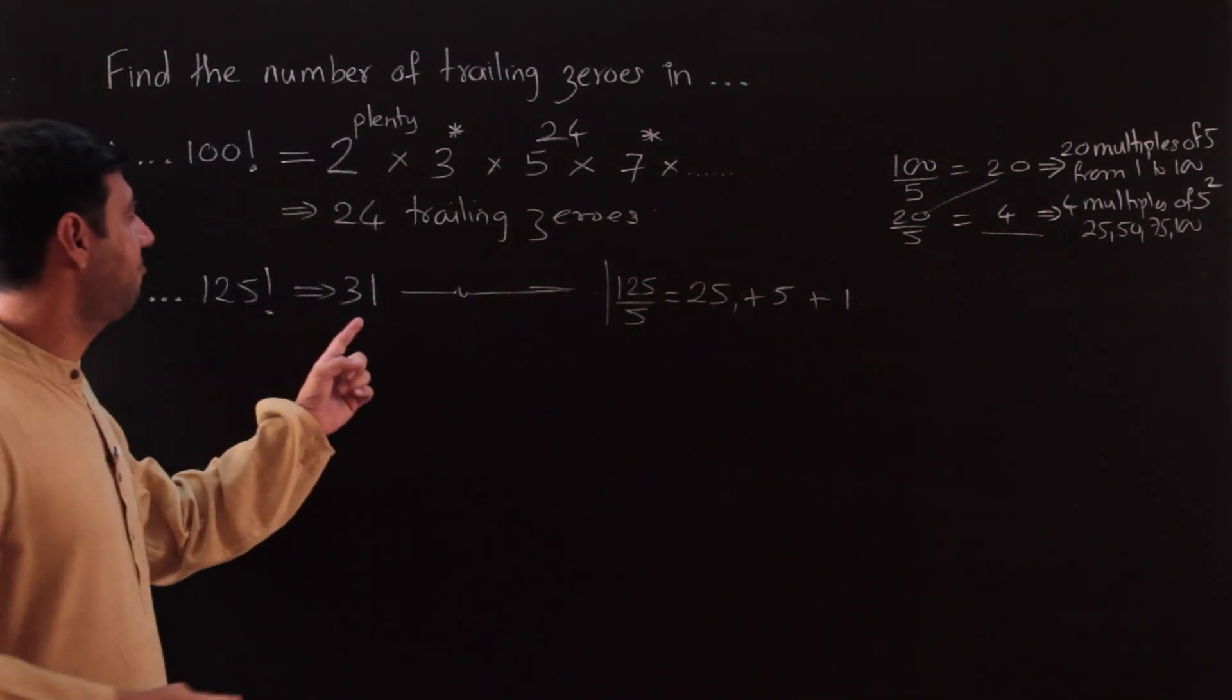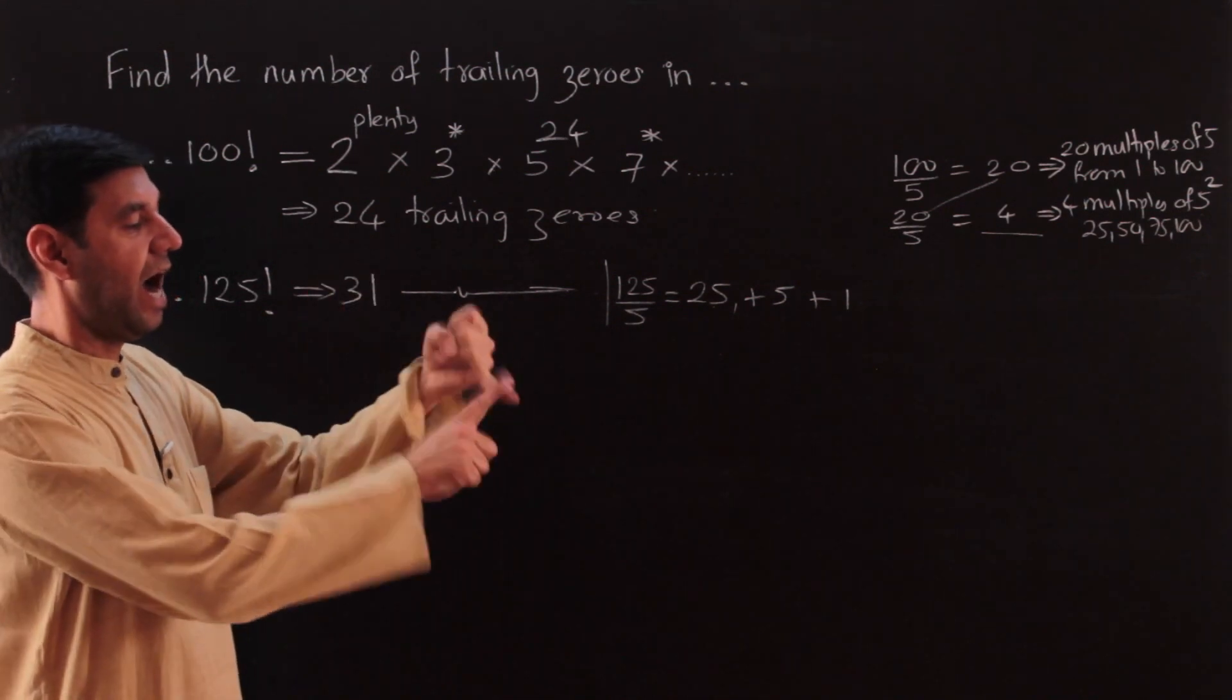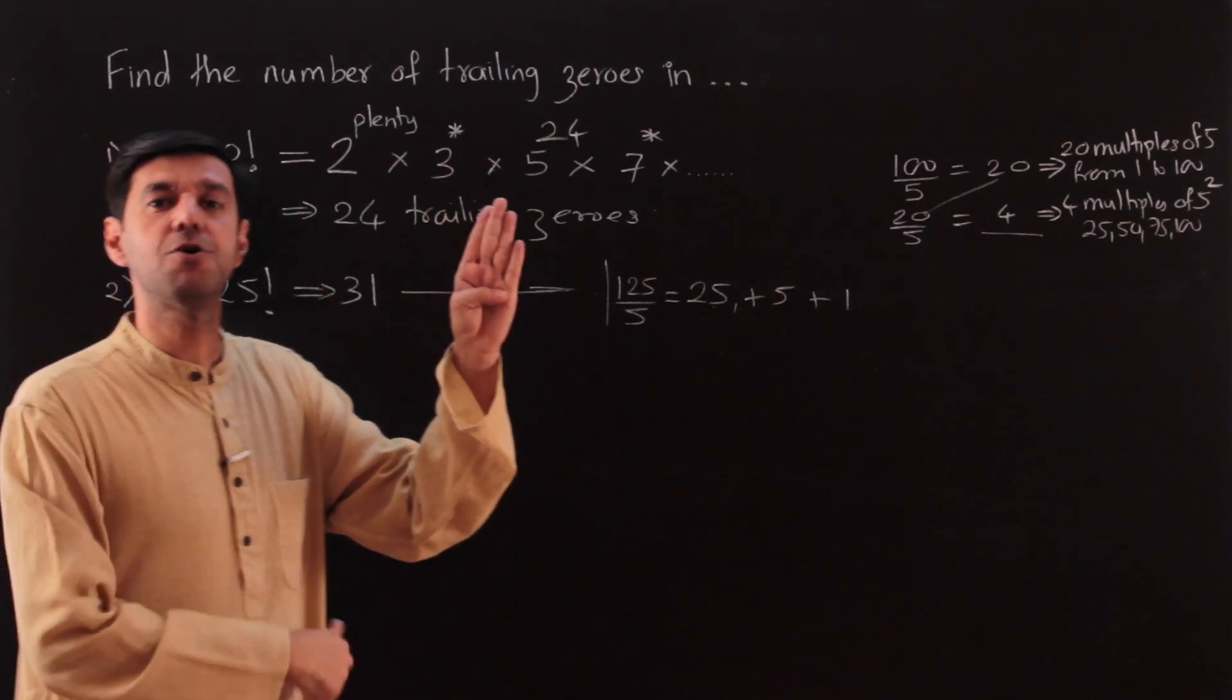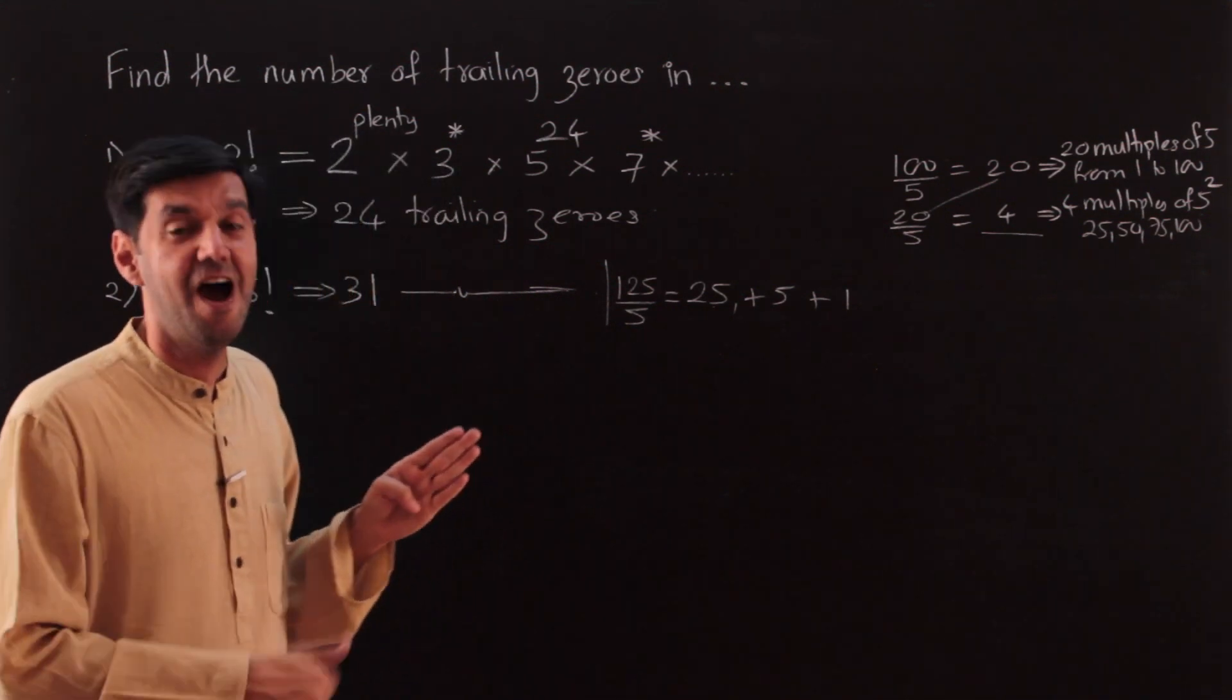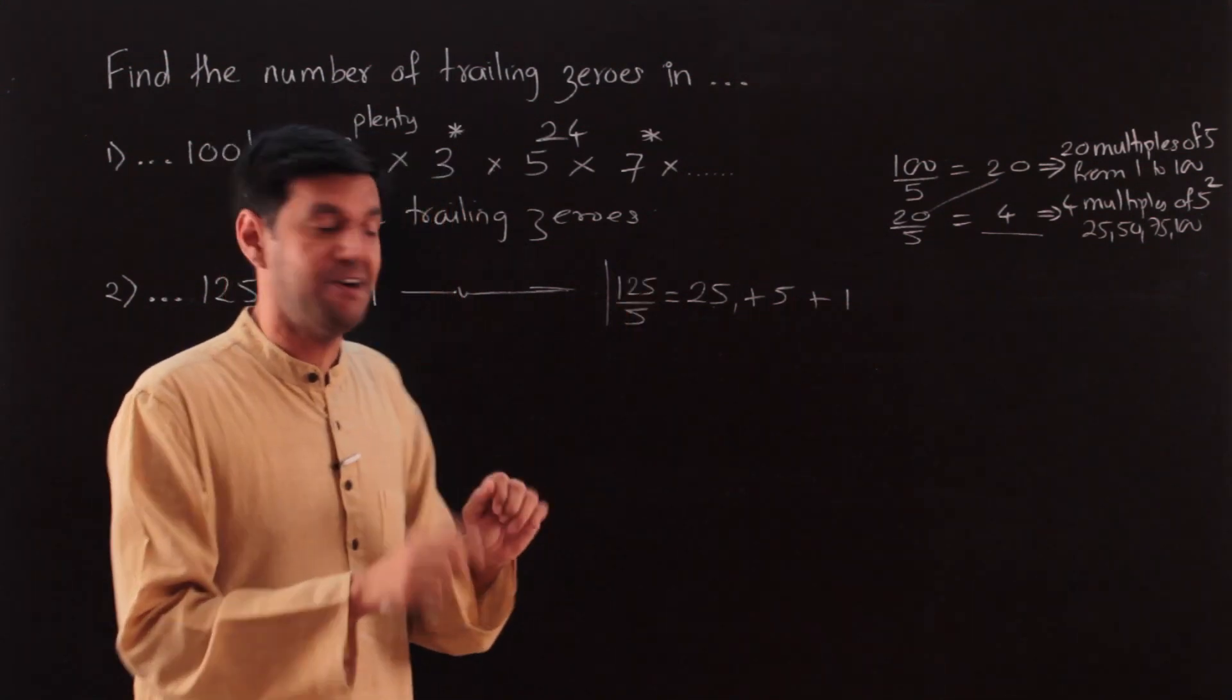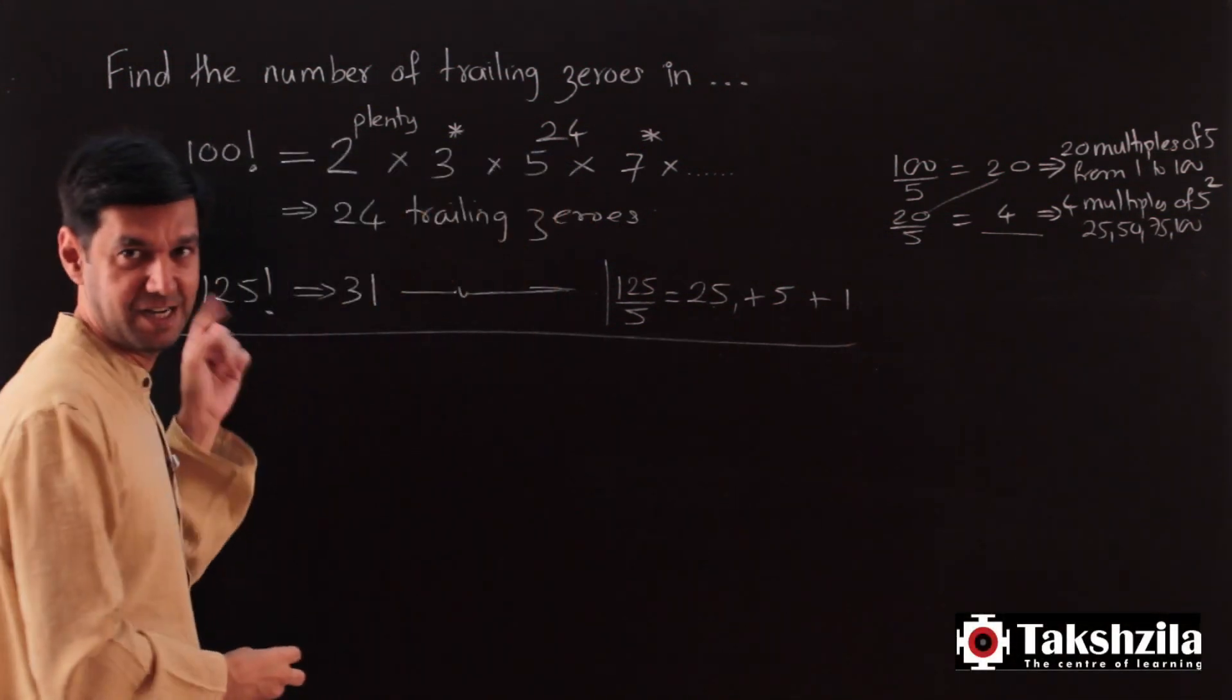125 would have 31 trailing zeros. You already have the 24, and how many more do I get? 105, 110 gives me one zero, 115, 120 gives me one zero, 125 gives me - think about it - 125 is 5 cube, therefore you get a third level here. So it will give me 4. And 3, 7 when I add 7 to 24, I get 31. Please do that in your mind, we will be using this. Let's build up on these questions now.